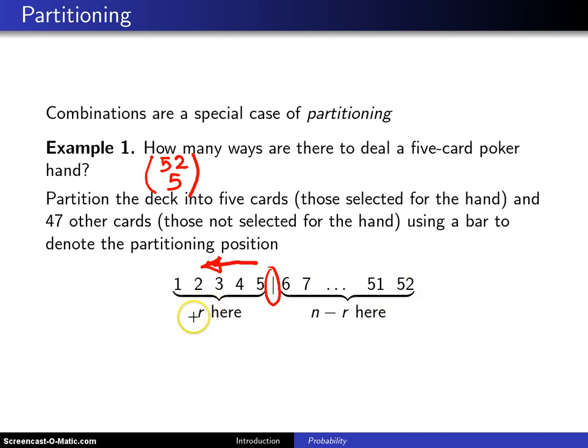So in general you have R on this side of the bar, and N minus R on that side of the bar. Now that's a simple problem that you've seen before. Next we'll do something that's a little more complex.